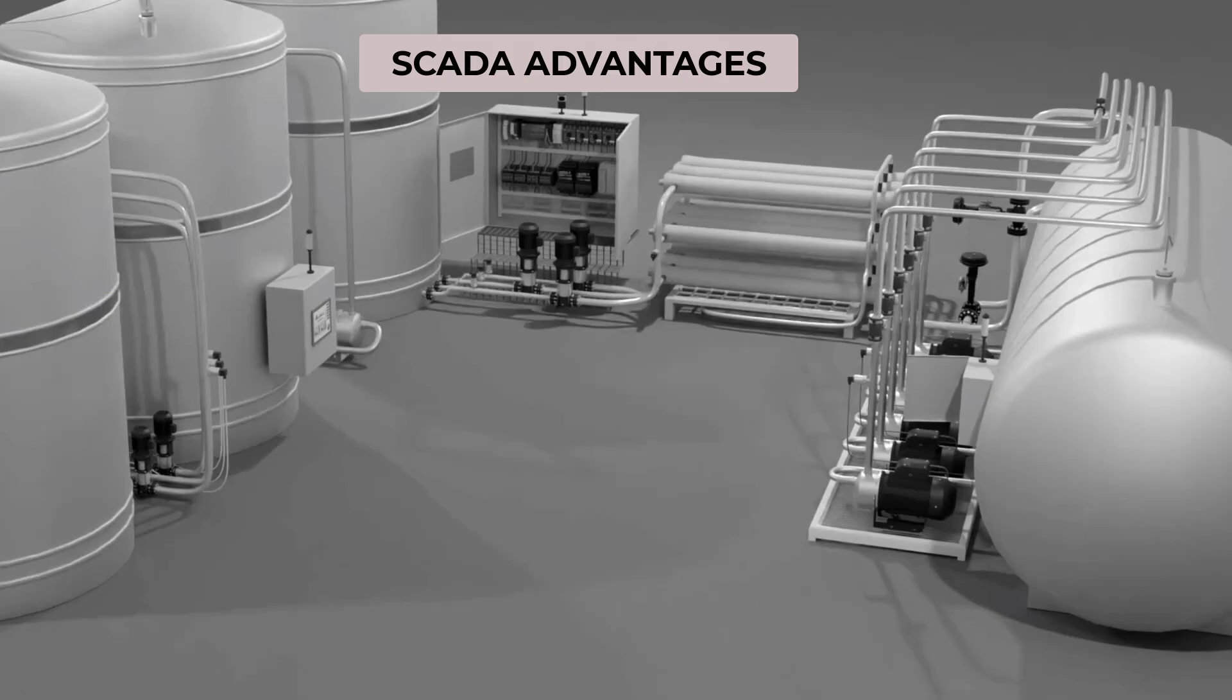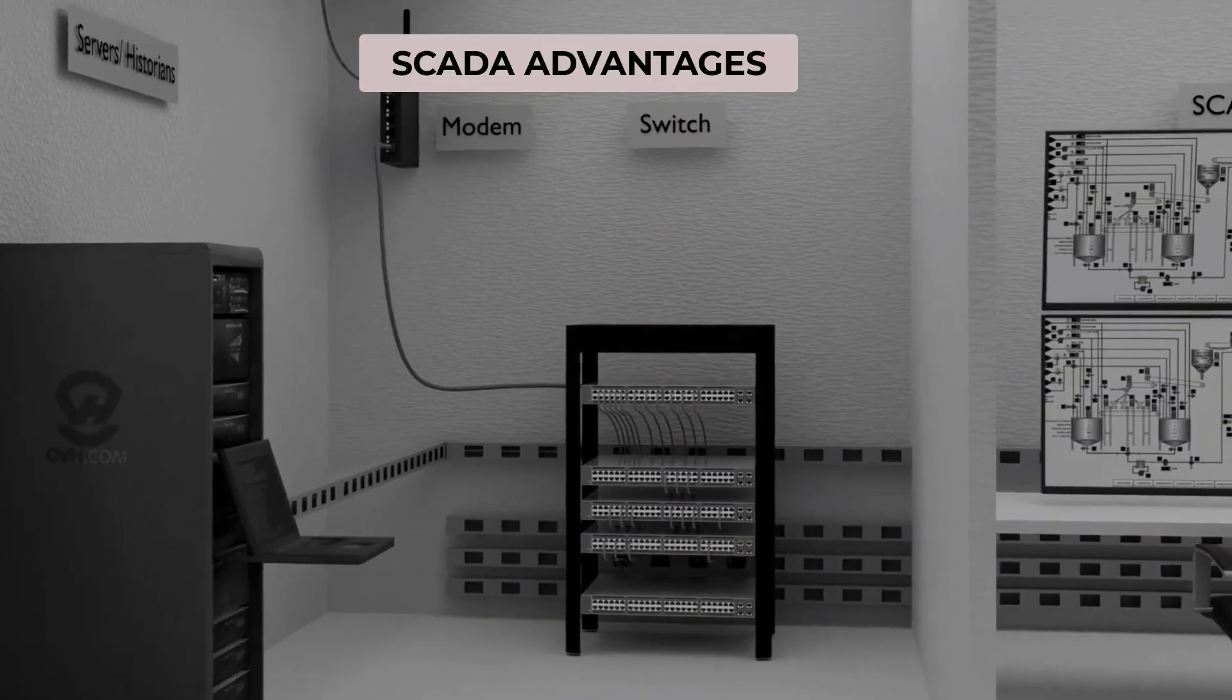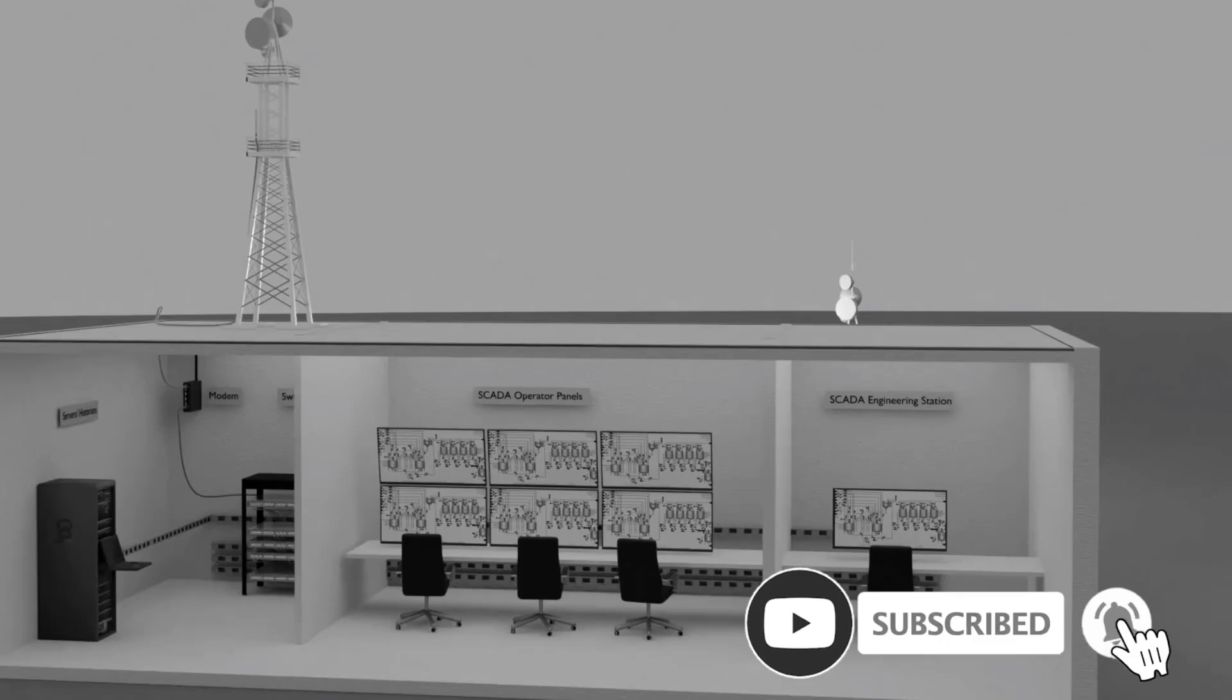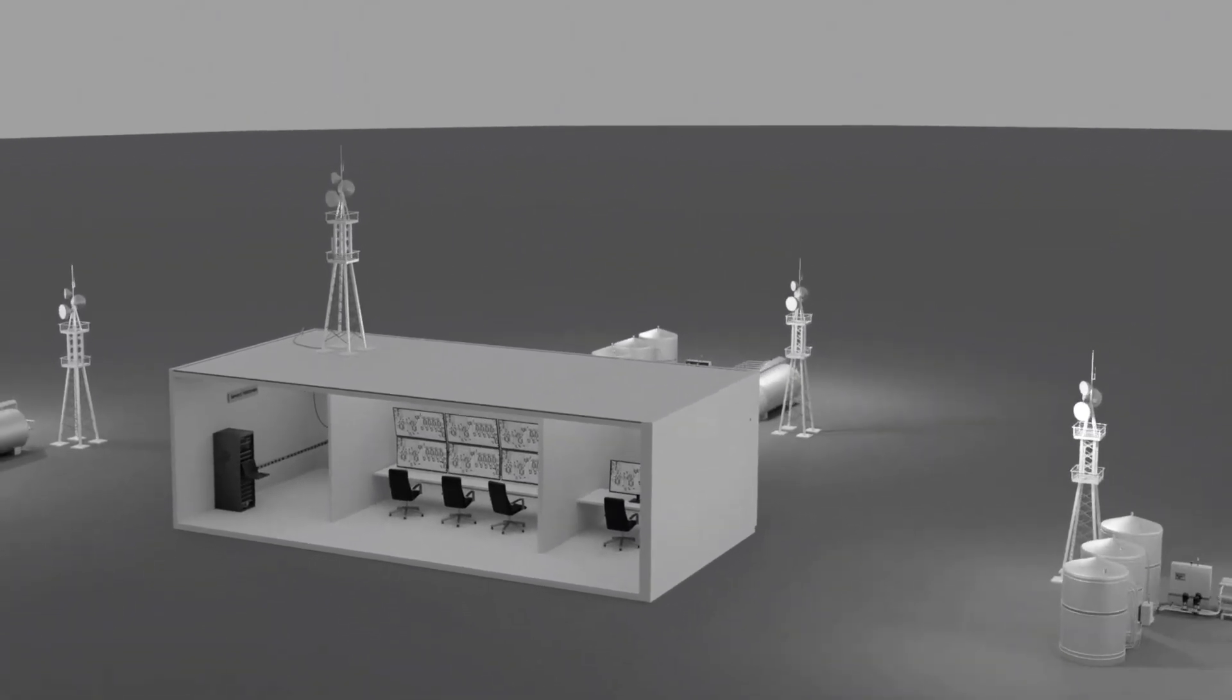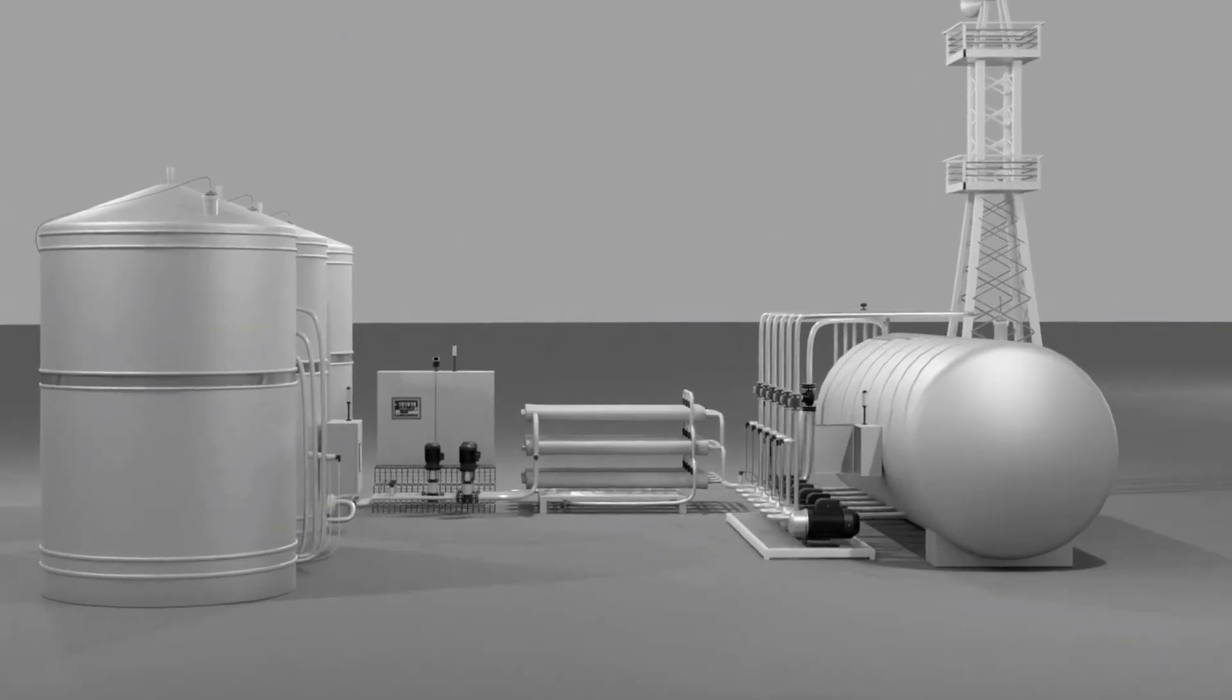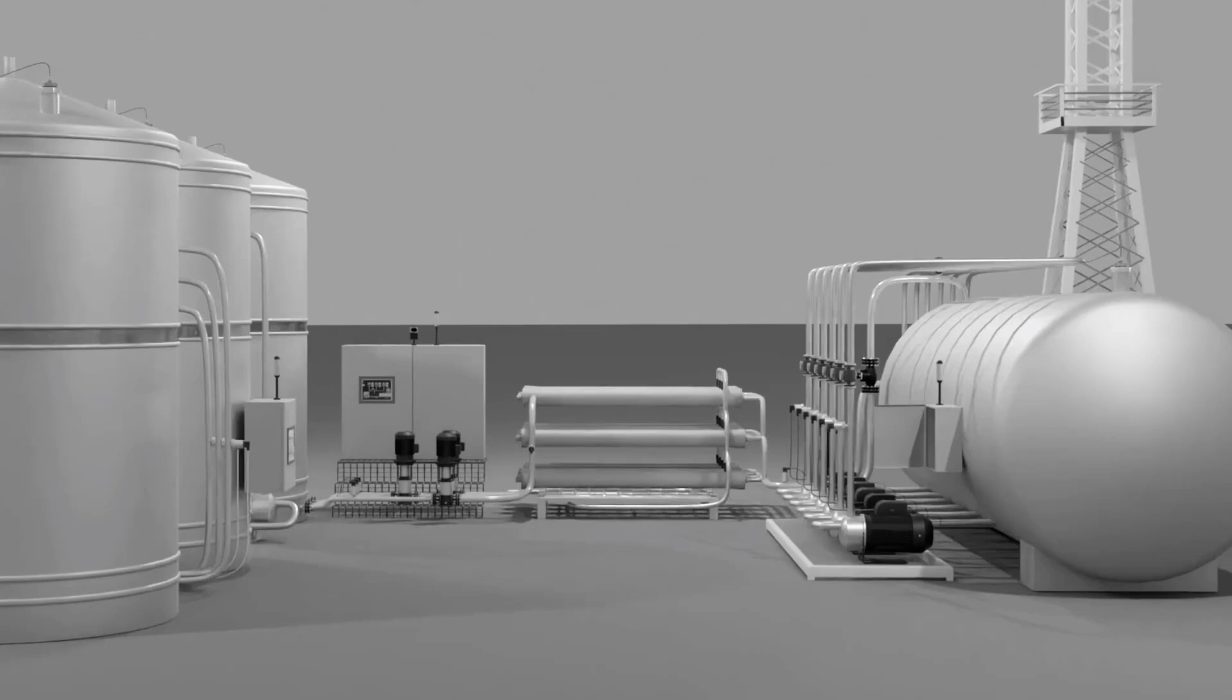Overall, SCADA plays a crucial role in modern industrial automation, empowering organizations to optimize operations, enhance safety, and achieve sustainable growth. In summary, remote SCADA implementation extends the benefits of real-time monitoring and control to distant locations, enhancing operational efficiency, ensuring safety, and reducing costs in industries like oil and gas, utilities, and environmental monitoring.